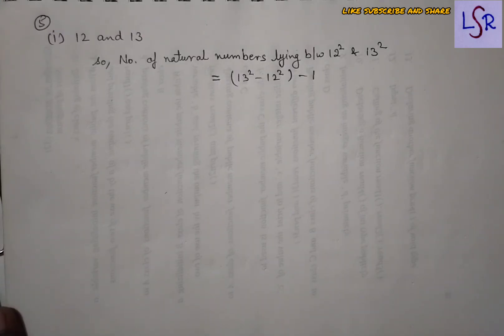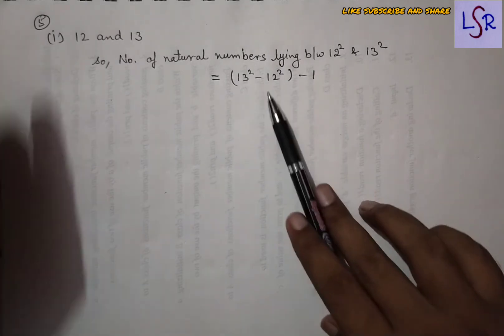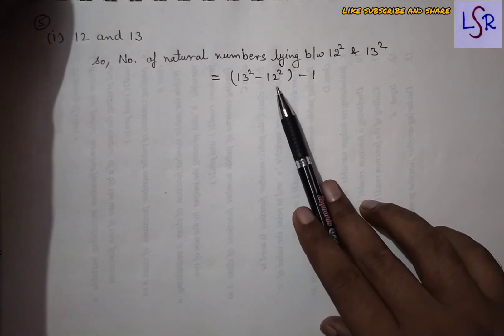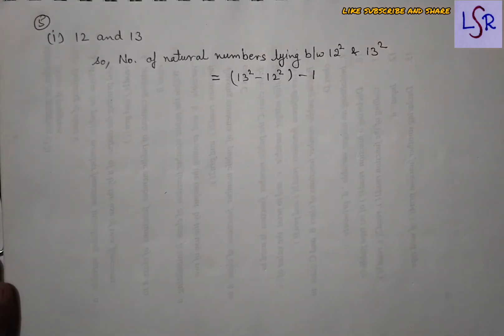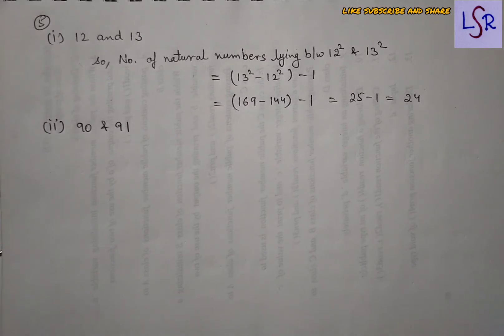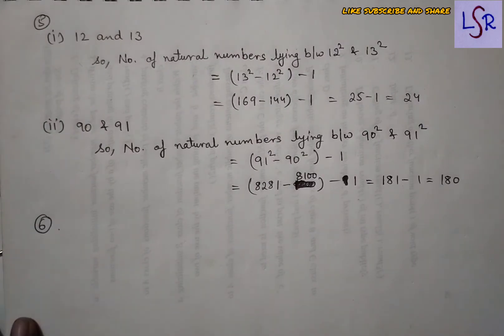In Question 5, we find how many natural numbers lie between the squares of two given numbers. For 12 and 13: the count equals 13²−12²−1. We subtract 1 because direct subtraction includes the last number, which we need to remove. For 90 and 91: it equals 91²−90²−1, which gives 180 as the answer.